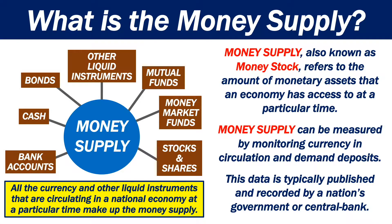Money supply, also known as money stock, refers to the amount of monetary assets that an economy has access to at a particular time. Money supply can be measured by monitoring currency in circulation and demand deposits. This data is typically published and recorded by a nation's government or central bank. All the currency and other liquid instruments that are circulating in a national economy at a particular time make up the money supply.